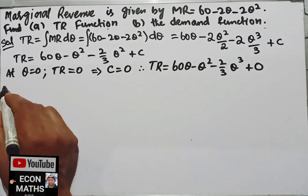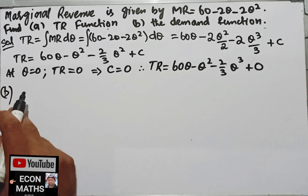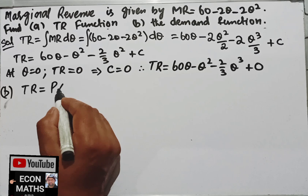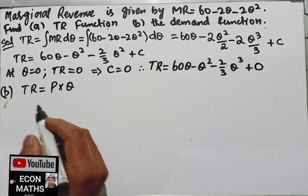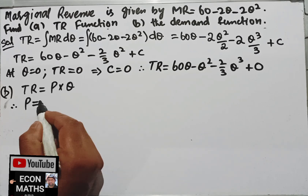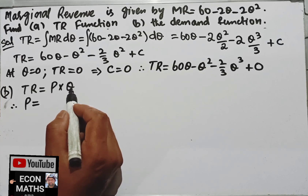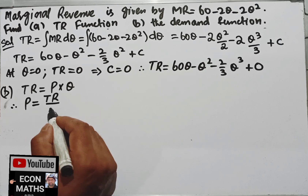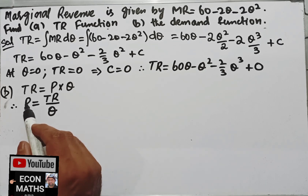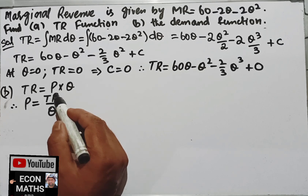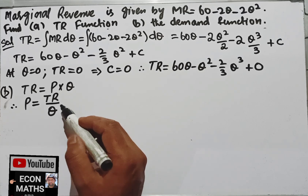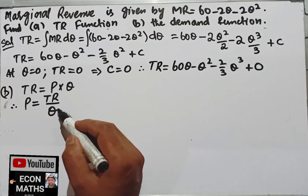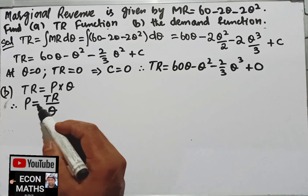Since we know that total revenue equals price into quantity, therefore price equals TR divided by Q. So the demand function is equal to total revenue divided by Q. This is also the average revenue function, because total revenue divided by quantity is average revenue, and it is also the demand function.